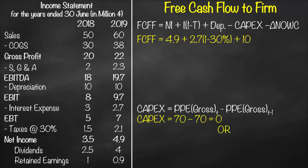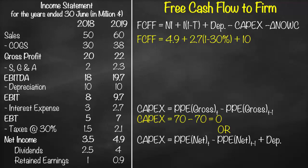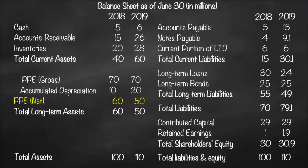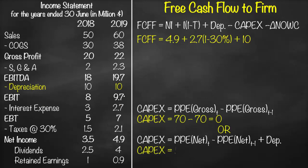Alternatively, we can calculate CapEx using PP&E Net: CapEx = PP&E Net(t) − PP&E Net(t−1) + Annual Depreciation. From the balance sheet, PP&E Net in 2019 is 50, minus PP&E Net in 2018 which is 60, plus annual depreciation from the income statement of 10. So: 50 − 60 + 10 = 0.